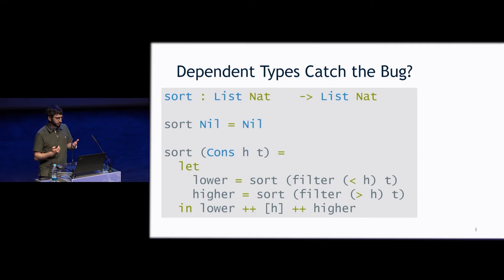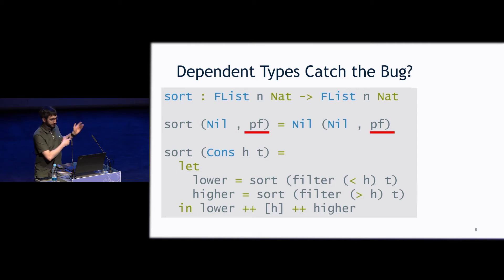Is this going to catch the bug? So, let's look at how we would change our code. We change our list in type signature to flist indexed by n, and so we're saying that whatever the input length is, the output had better have the same length. Now, our nil case, nil is paired with a proof that the length was actually equal to zero, and we can use that same proof in our results.